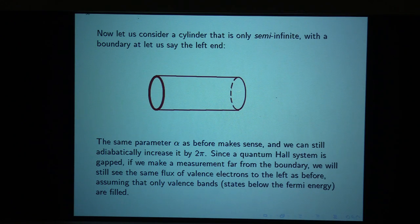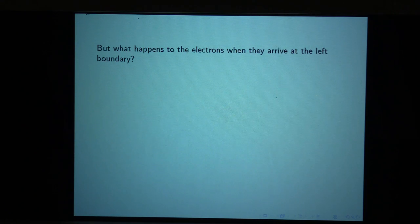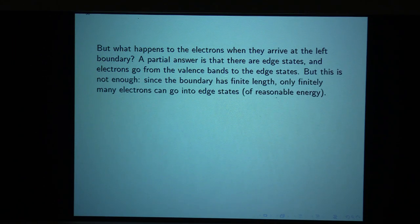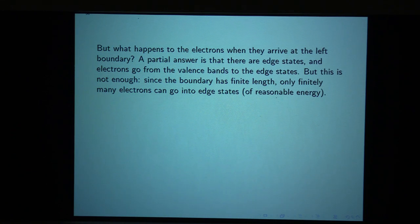There's an obvious problem with pile-up when we reach the end. What happens to the electrons when they arrive at the left boundary? They can't just accumulate there. Part of the answer is that there are edge states, and electrons can go from valence states into edge states. But that can't be the whole answer because since the boundary has finite length, only finitely many electrons can go into edge states of reasonable energy. They must eventually move into valence states and start moving back to the right — that's the only cure for the electron pile-up.